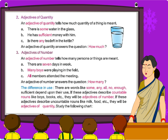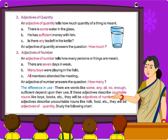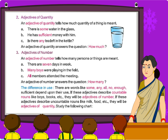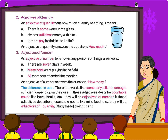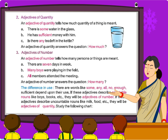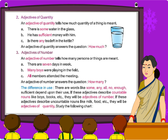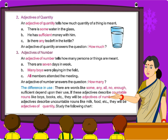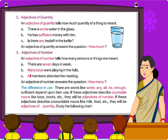The difference in use. There are words like some, any, all, no, enough, and sufficient whose classification depends upon their use. If these adjectives describe countable nouns like boys, books, etc., they will be adjectives of number. If these adjectives describe uncountable nouns like milk, food, etc., they will be adjectives of quantity.